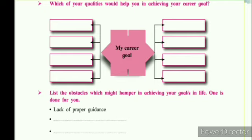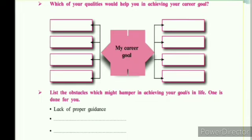List the obstacles which might hamper achieving your goal in life. What are the obstacles which may create difficulties in the path of your success? First: lack of proper guidance. Second: maybe lack of support from family — not everyone gets proper support. Third: economy — monetary issues, as money is important to get admission for that profession. And another: hard work — if you cannot continue hard work through that particular professional degree, you cannot complete it.